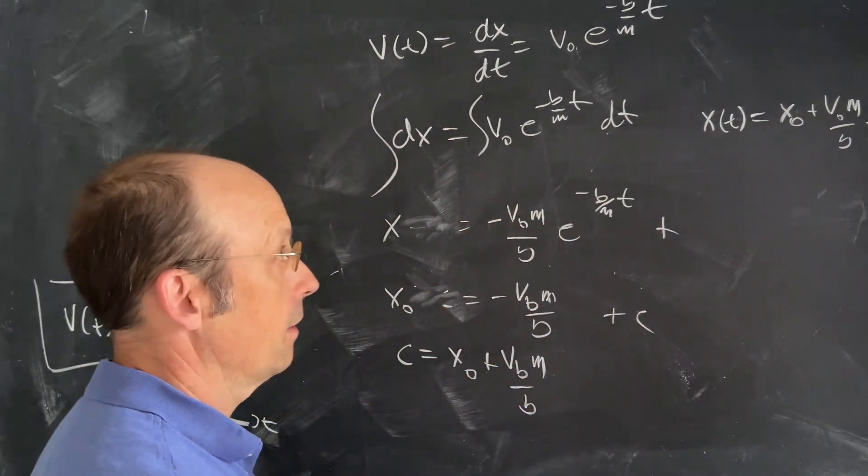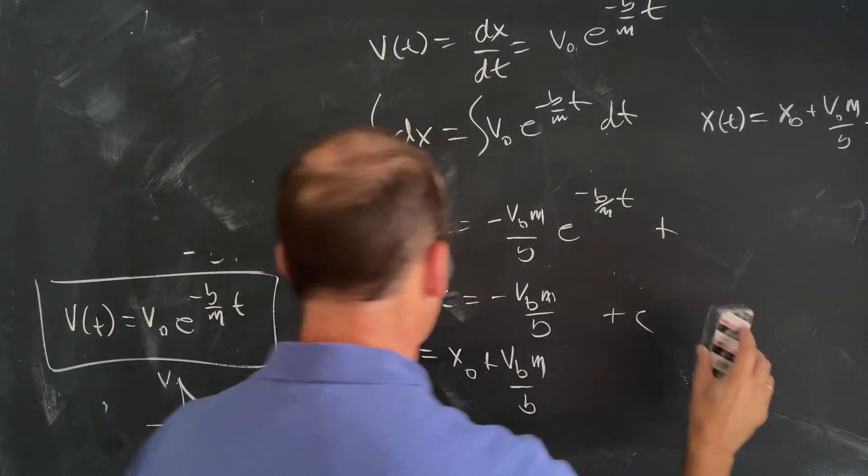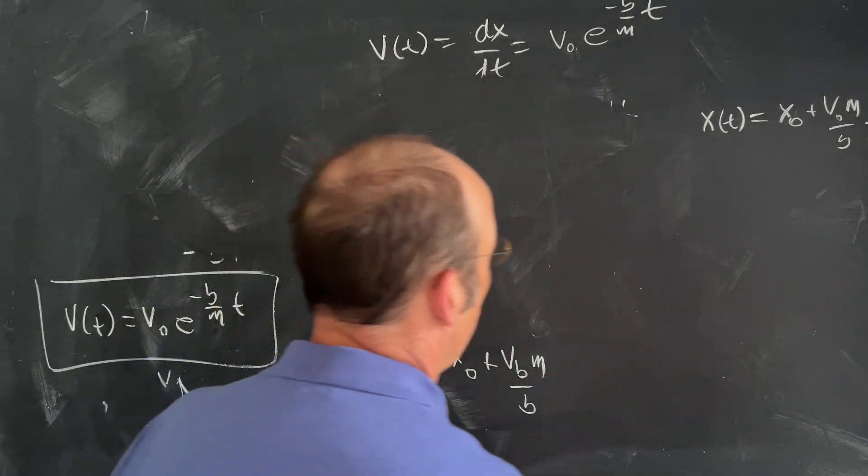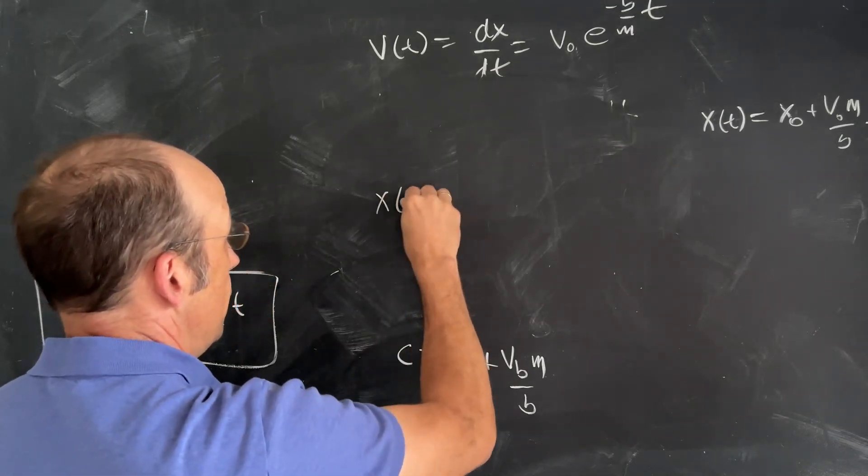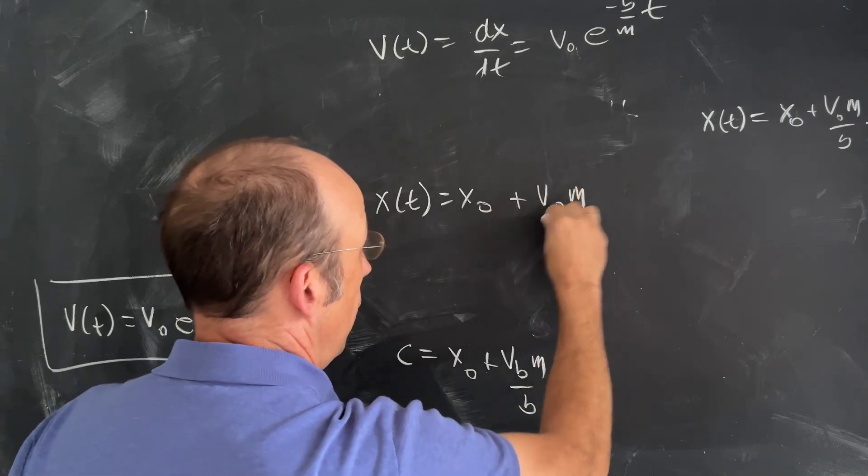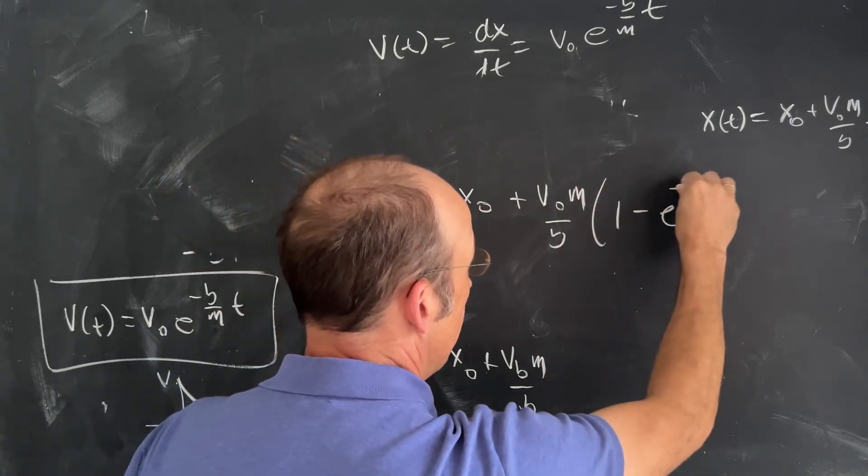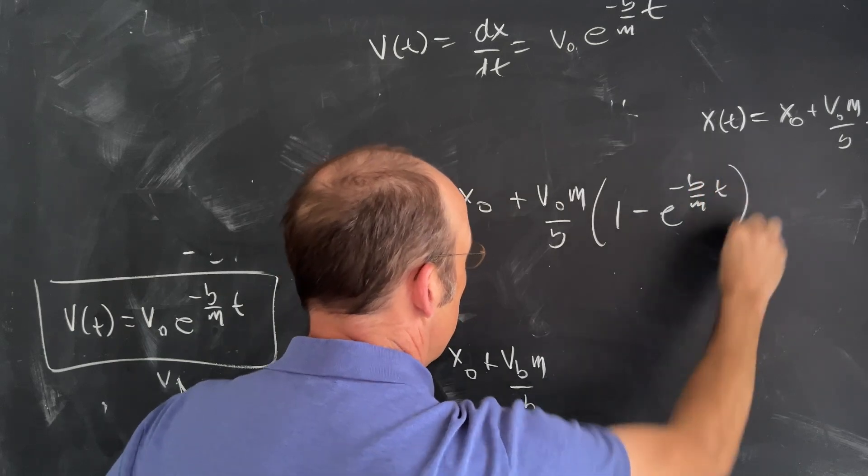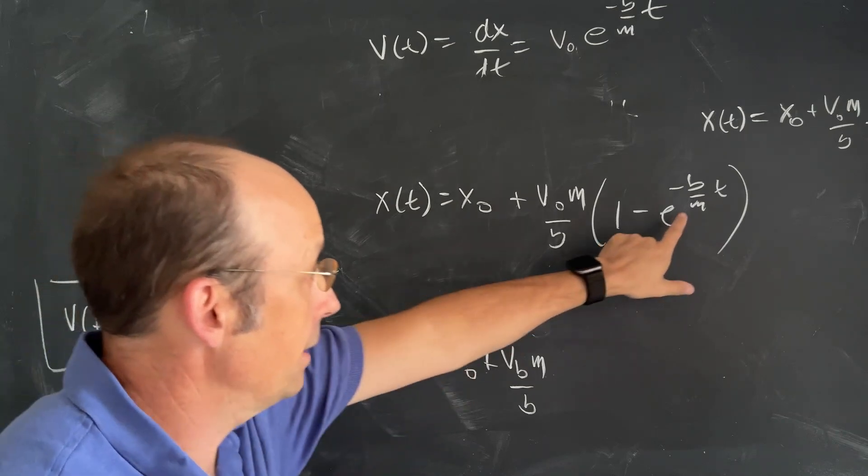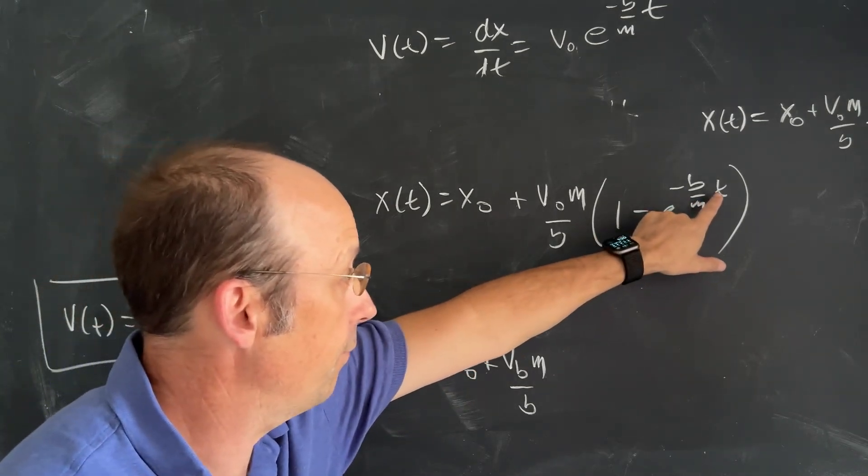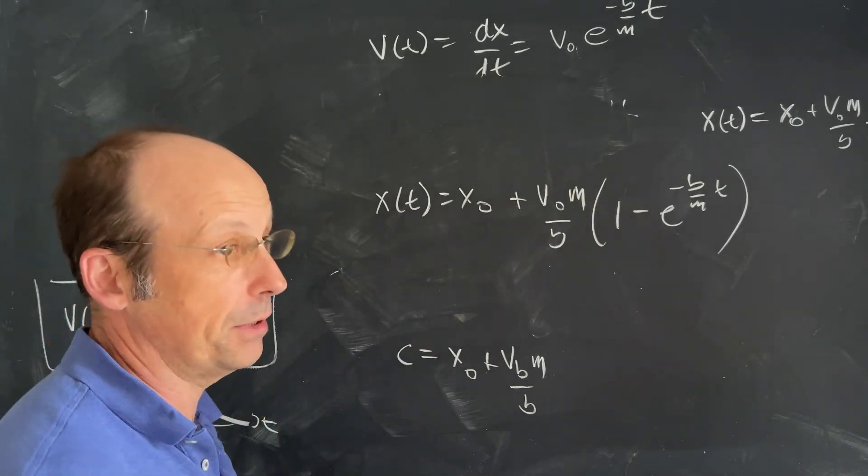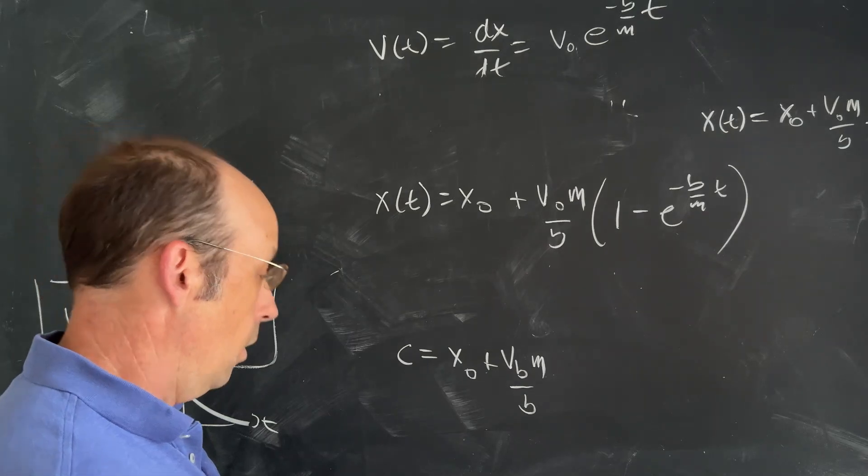Now I can put that into my equation. x as a function of t is x₀ plus v₀ m over b times (1 minus e to the negative b over mt). What should happen? x should keep increasing over time. As t goes to infinity, this goes to zero and I have one. It does reach some constant position. So that's good.